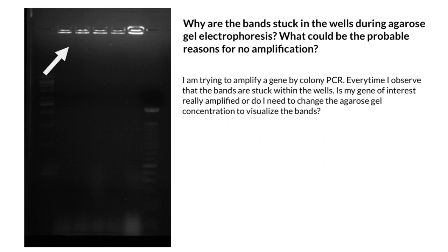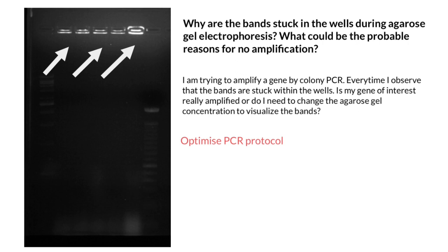Every time I see results like this, first of all I want to say that the person who got such results needs to optimize not the gel electrophoresis itself, but the PCR protocol. I don't see target amplicons in this gel — I think the samples haven't amplified. What I see on this gel is genomic DNA of bacteria. Since the person was doing a colony PCR, it is normal to see these high molecular weight DNA bands from the bacterial genome.